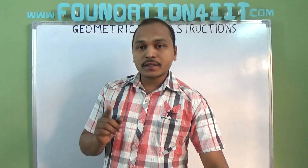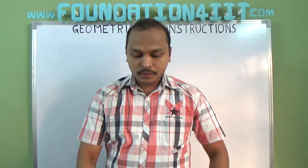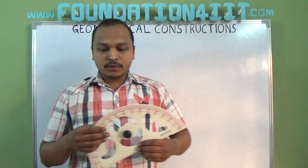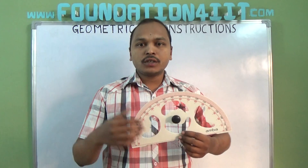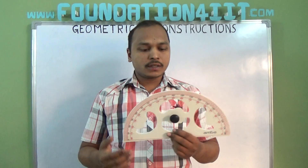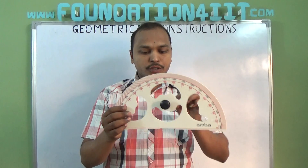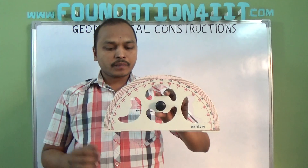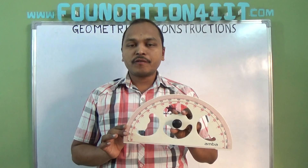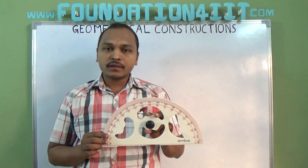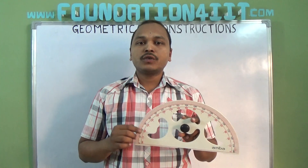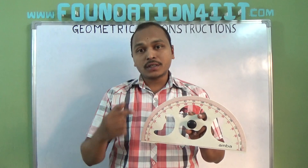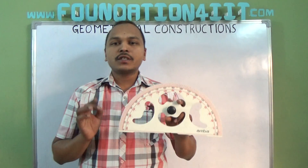I'll show you one by one, along with a scale — I'll show you the big things first. You know the geometry box, you'll see the things also. So this is the protractor. Using this protractor we find angles, or to construct angles we also use this protractor.